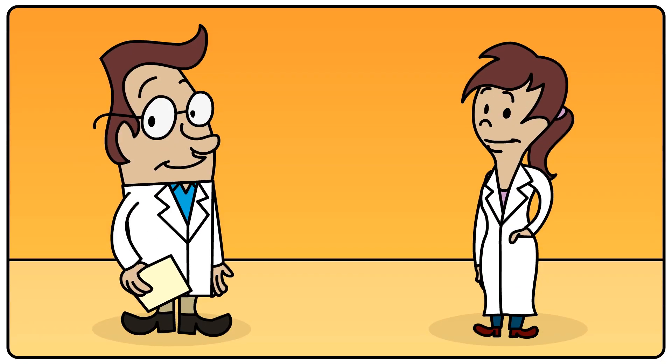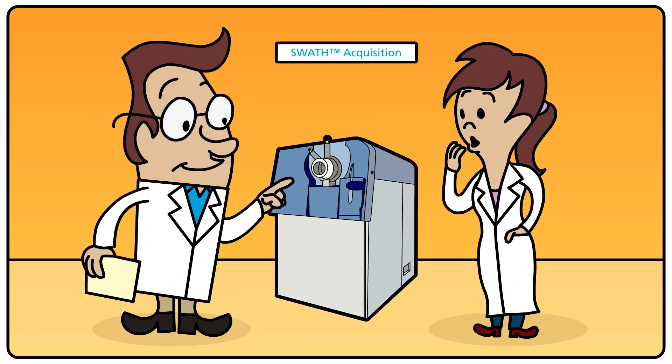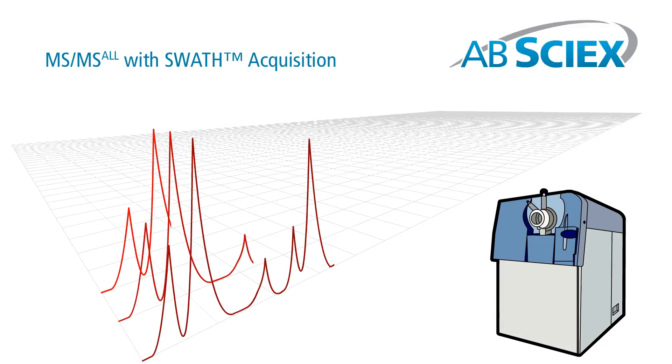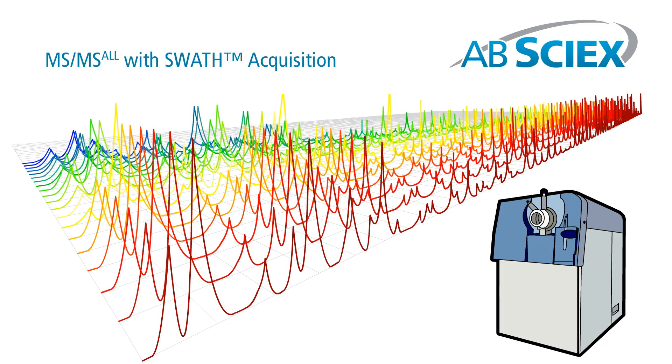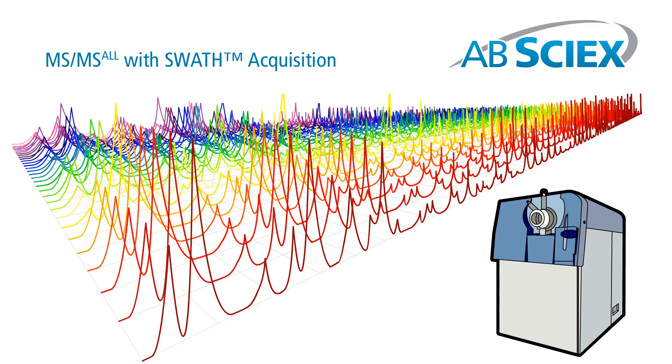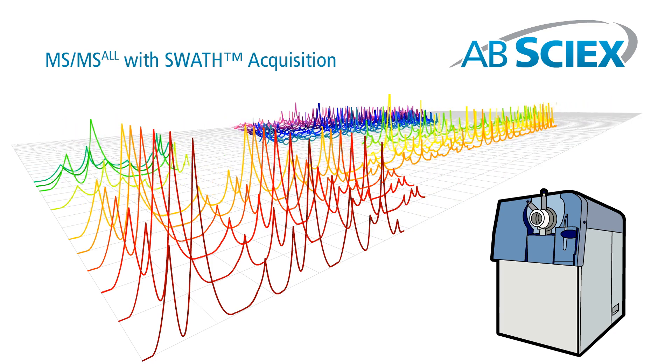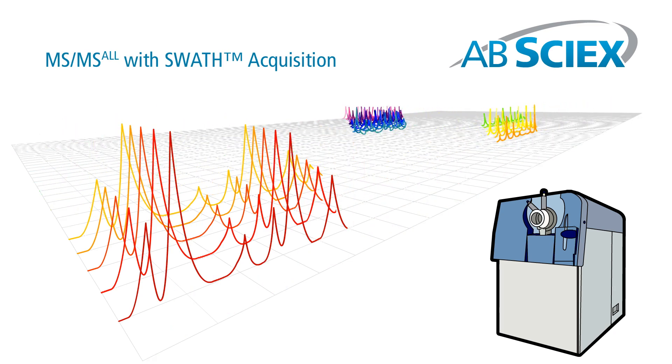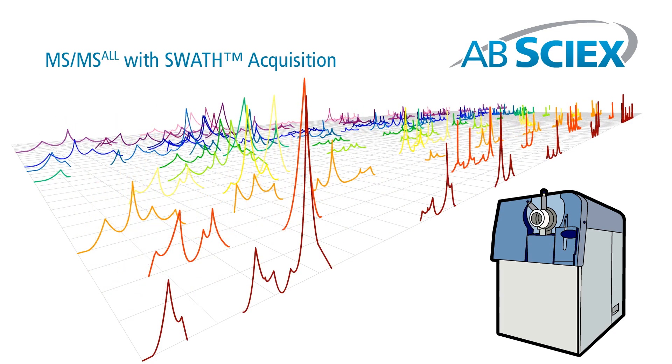Sally and Bob, it's time you met SWATH acquisition on the AB SCIEX Triple TOF systems. SWATH acquires highly reproducible quantitative MS/MS data for virtually every detectable peptide or protein in even the most complex samples, combining the quantitative strength of targeted proteomics with the scope and depth of traditional shotgun proteomics.